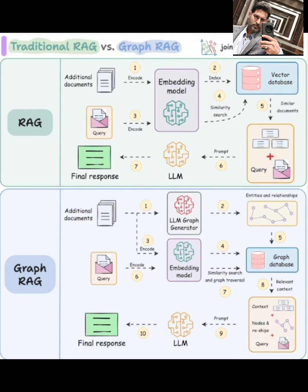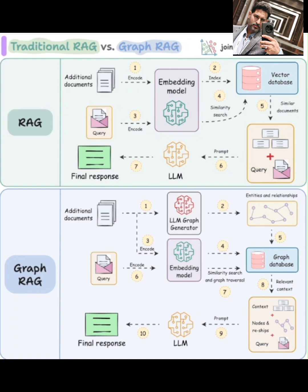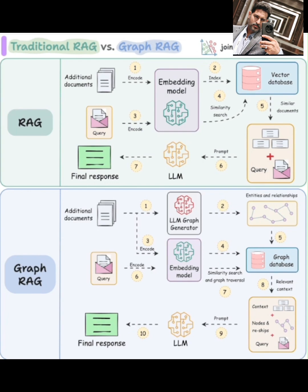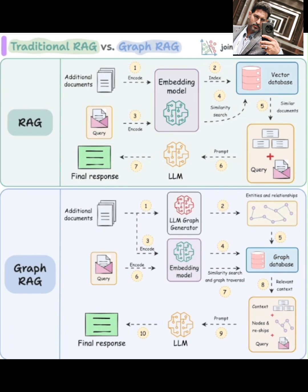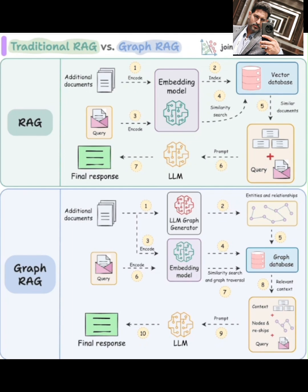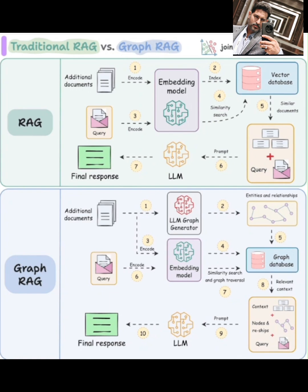The key difference with graph RAG is that it understands not just the content of the documents, but also how different concepts and entities within those documents are linked. This allows the LLM to leverage a more structured and interconnected understanding of the information. In a nutshell, traditional RAG finds relevant text chunks based on similarity, while graph RAG understands entities and their relationships for more context-aware retrieval. Both approaches aim to make LLMs more knowledgeable, but graph RAG can potentially unlock deeper insights by understanding the connections within the data. Thanks for watching.